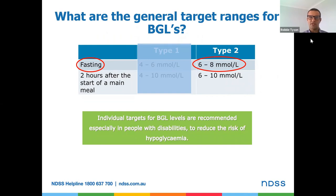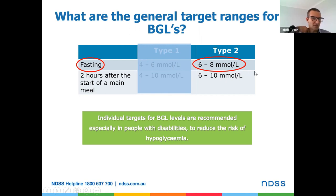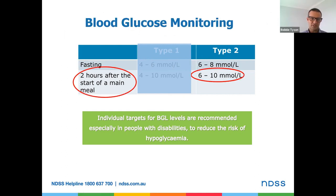Looking at blood glucose target ranges: for people living with type 2 diabetes, these are generalised and should be individualised based on type of diabetes, medication, age, etc. Fasting, first thing in the morning, the target range is somewhere between 6 and 8 millimoles per litre. Two hours after a meal, we're looking at between 6 and 10. Blood glucose levels above 10 regularly are likely to be causing complications — it's when we see a pattern developing above 10 or elevated fastings that it becomes concerning.